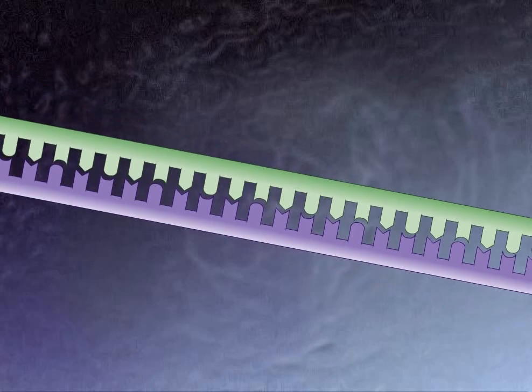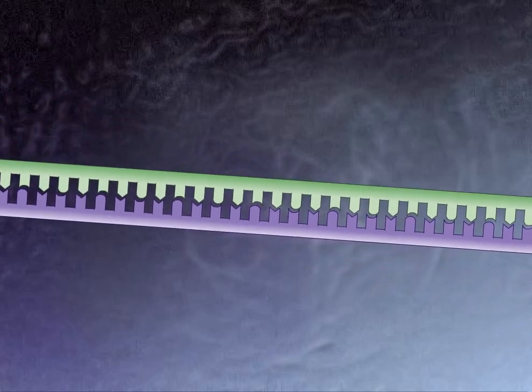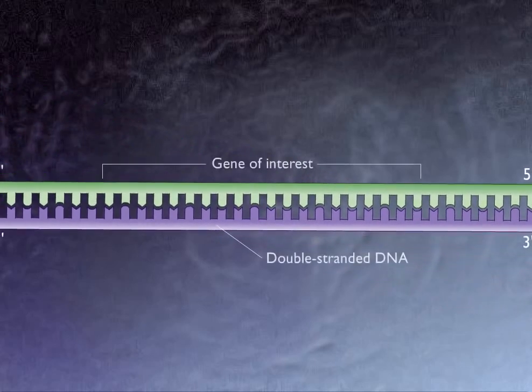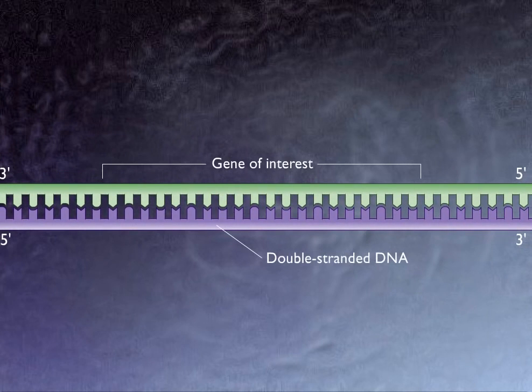The polymerase chain reaction is a method for making many copies of a specific segment of DNA, starting with a very small amount. This technique can be used to identify specific microorganisms from a small amount of DNA and to identify persons involved in crimes from DNA on cigarettes or in a single hair follicle.